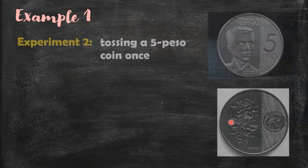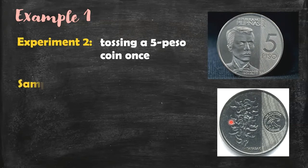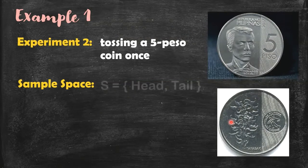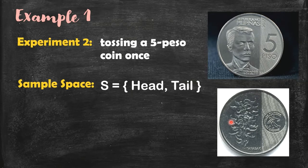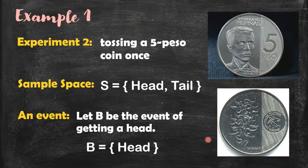This is the second experiment: tossing a five-peso coin once. We already know this, right? So if I ask you to give me the sample space, it contains head and a tail, alright? Now let's consider this event. Let B be the event of getting a head. So obviously, our B is the set containing a head.